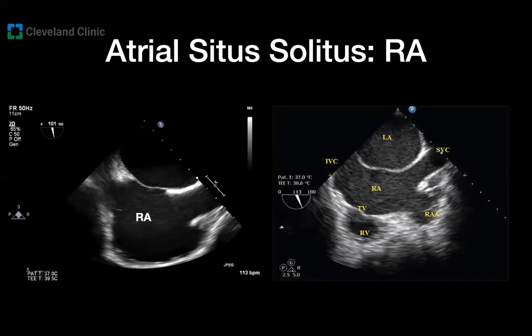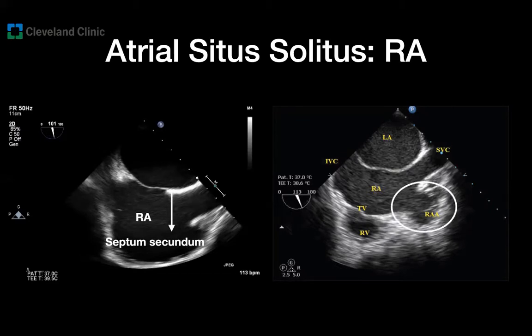Let's start with the right atrium. The image on the left shows the septum secundum — the limbus of the fossa ovalis — which is a right-sided structure; embryologically it belongs to the right atrium. The image on the right shows that the right atrial appendage should look more triangular with a very broad base — a big opening at the base of that right atrium — which is very different from the left atrial appendage.